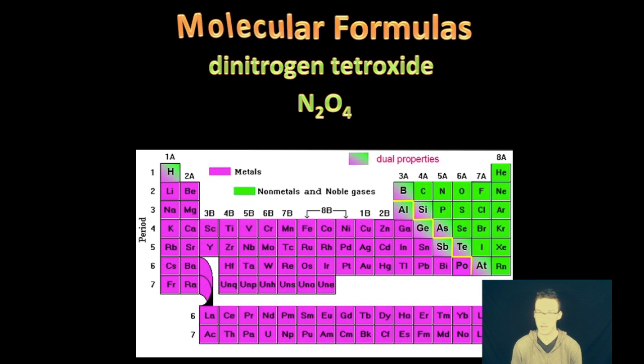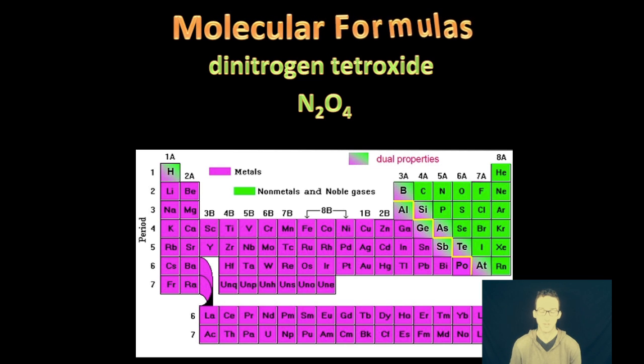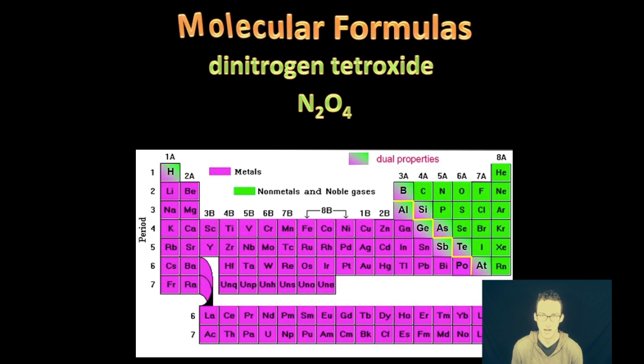Dinitrogen tetroxide is where things get a little interesting. Again, the molecular or actual formula for dinitrogen tetroxide is N2O4, which shows a ratio of two nitrogen to four oxygen. However, the empirical formula for this compound would be one nitrogen to two oxygen. So important to keep in mind that it's the covalent compounds. We've really got to watch out for and make a distinction between the empirical and molecular formulas.